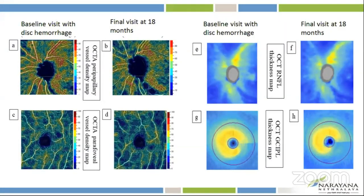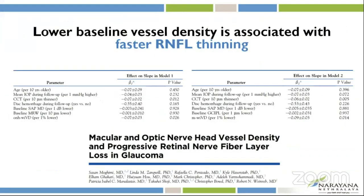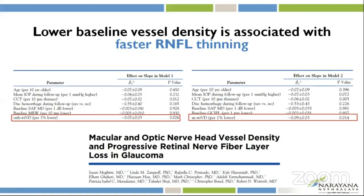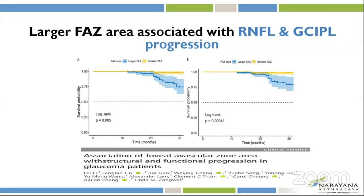Another study done in our hospital followed 18 POAG eyes with disc hemorrhage for an average of 2.6 years. This showed progressive RNFL and GC-IPL loss in the disc hemorrhage sector but not in the other sectors. On OCTA, it showed progressive peripapillary and parafoveal vessel density reduction in both the disc hemorrhage and non-disc hemorrhage regions. A further study showed that lower baseline vessel density was associated with faster RNFL thinning. In 132 eyes with mild to moderate glaucoma followed for two years, every 1% lower vessel density at the optic nerve and macula showed a decrease of 0.07 and 0.09 faster rate of RNFL thickness decline. Another study also showed that a larger FAZ area was associated with RNFL and GC-IPL progression.